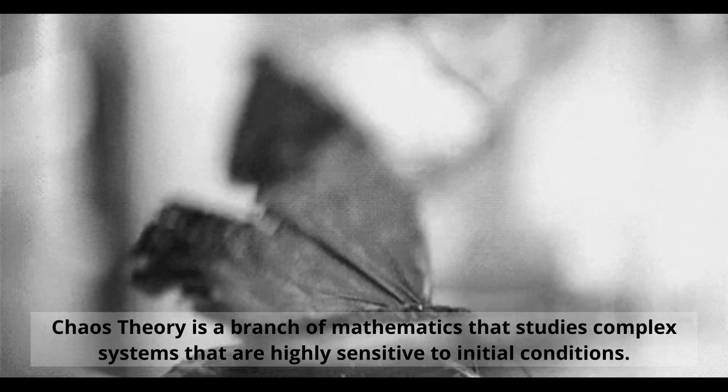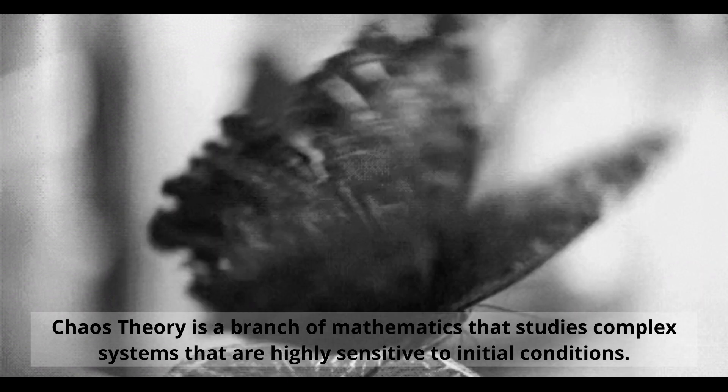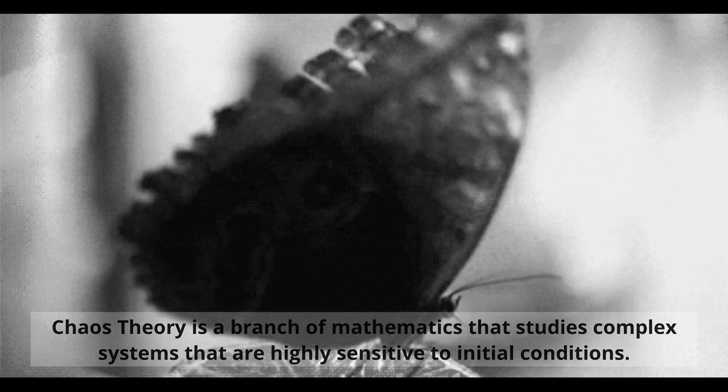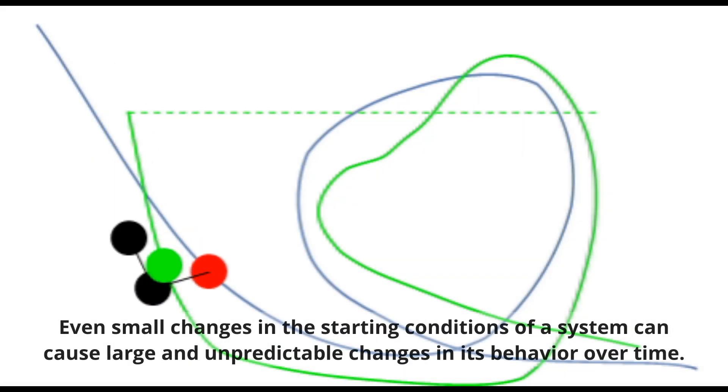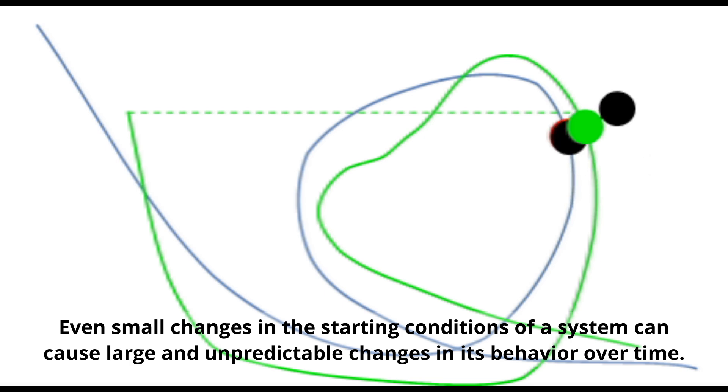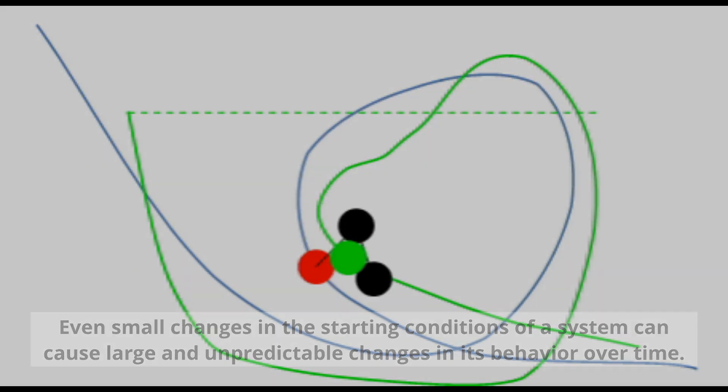The Chaos Theory. Chaos Theory is a branch of mathematics that studies complex systems that are highly sensitive to initial conditions. Even small changes in the starting conditions of a system can cause large and unpredictable changes in its behavior over time.